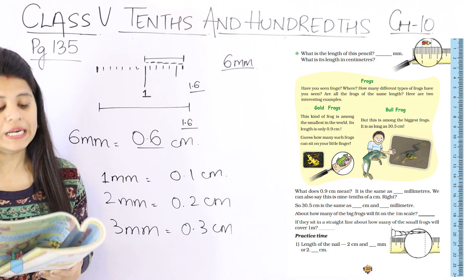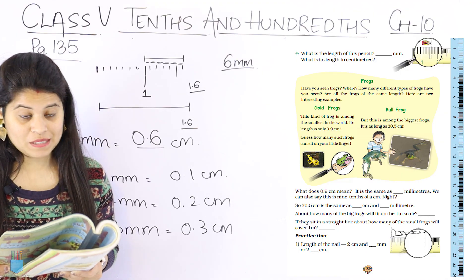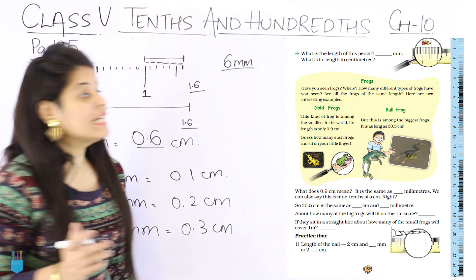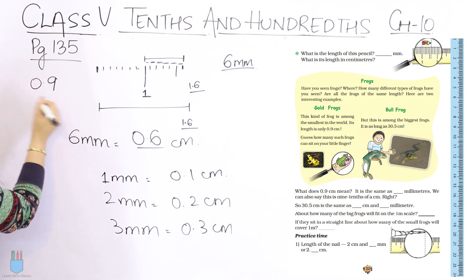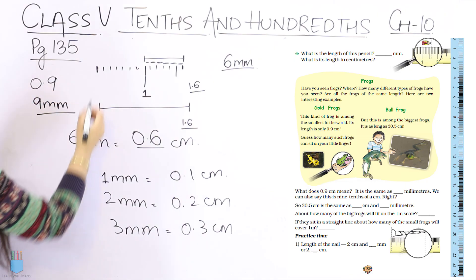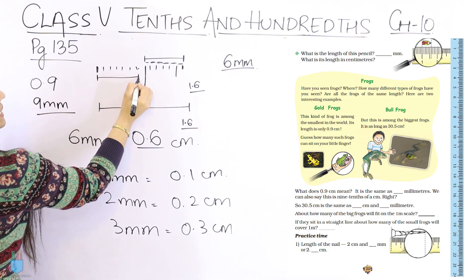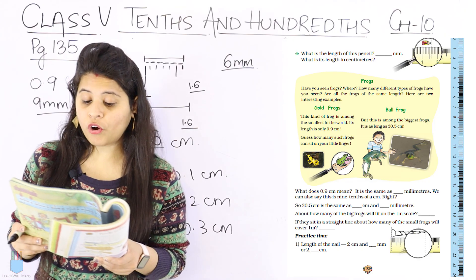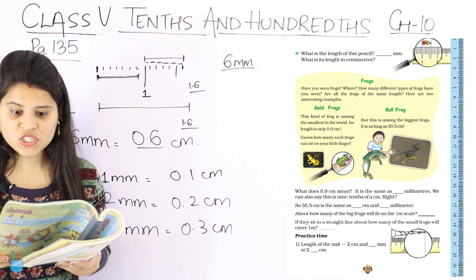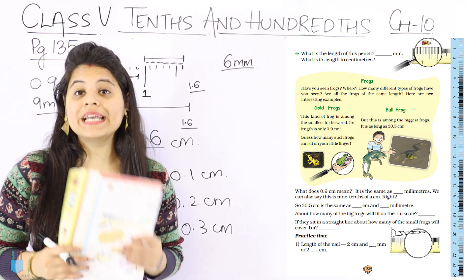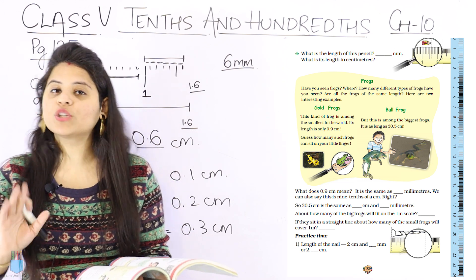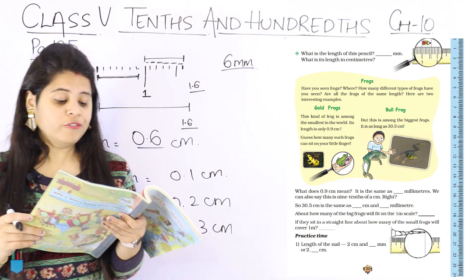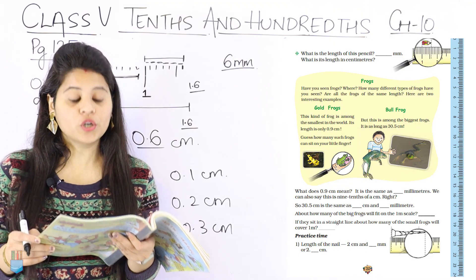The gold frog is among the smallest frogs in the world. Its length is only 0.9 centimeter. So the gold frog's length is only 0.9 centimeter — which is just 9 millimeters. 9 millimeters means if we start from here, it is less than 1 centimeter, so it is very small. The bullfrog, on the other hand, is among the biggest frogs.